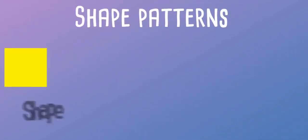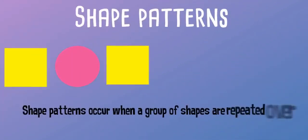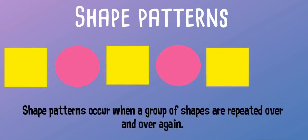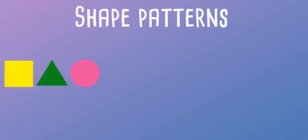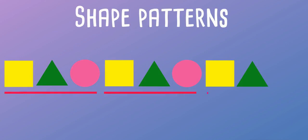Next we have shape patterns. Shape patterns occur when a group of shapes are repeated over and over again. In this example, the repeating part of the pattern is square, triangle and circle. So what comes next? It's easy. The next shape after the triangle is a circle.